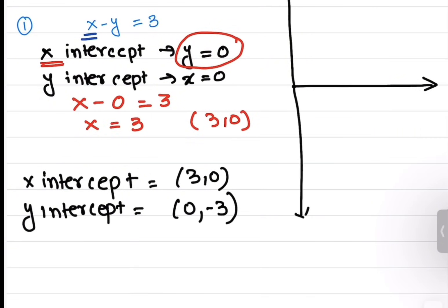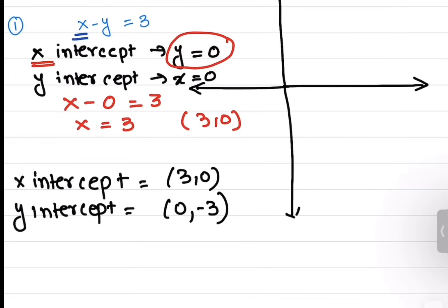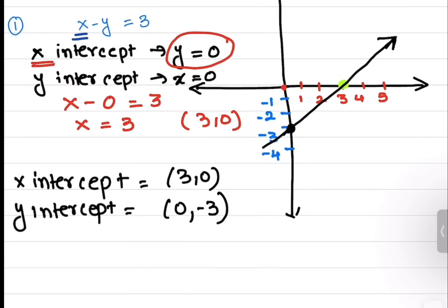Let me extend the line on the graph. The x intercept is 3 comma 0, and the y intercept is 0 comma negative 3. I'll mark both points on the graph and then connect those two dots, extending the line. This is the graph for the equation x minus y equals to 3.